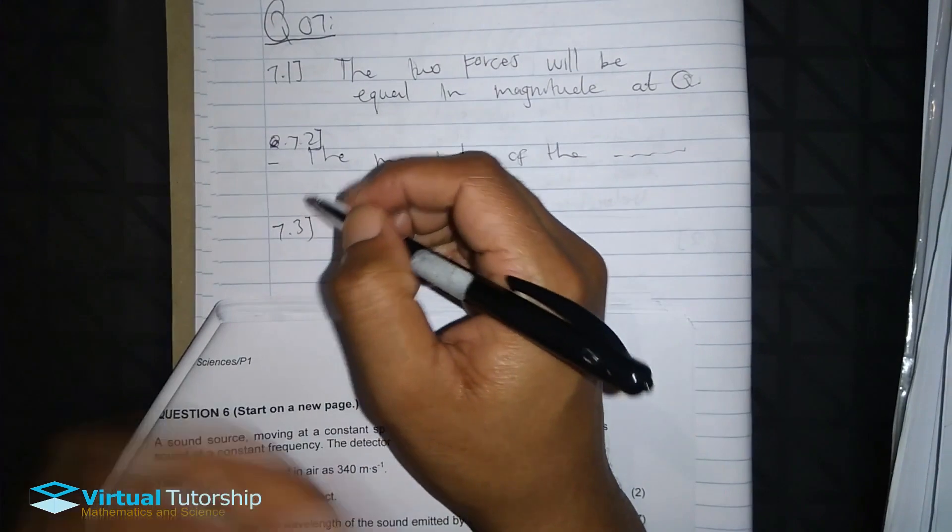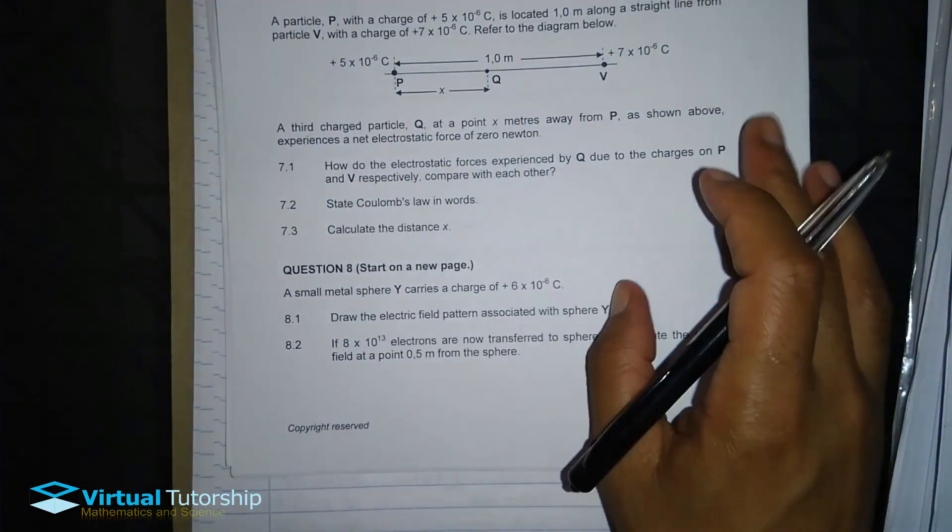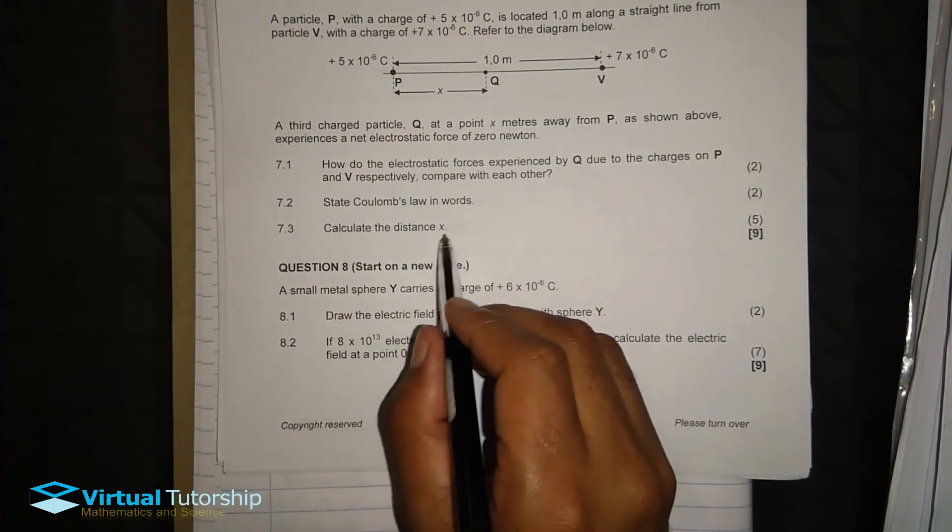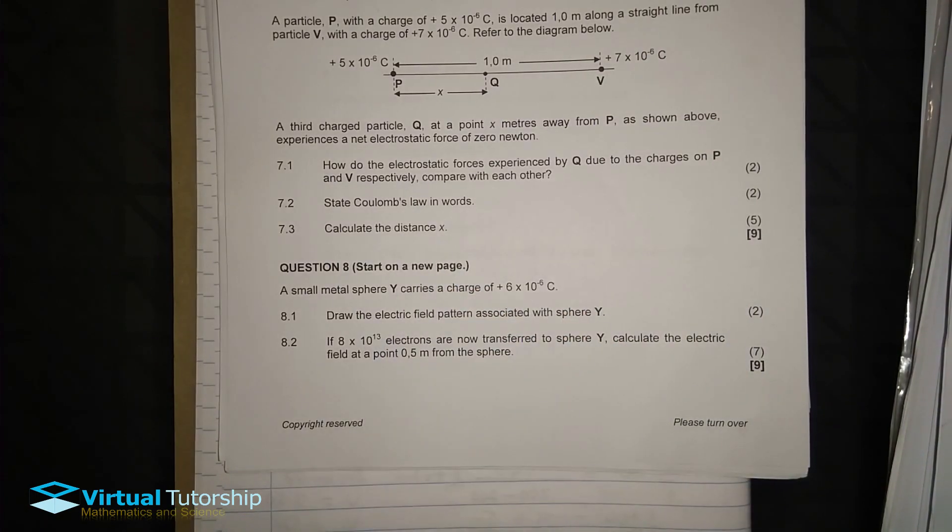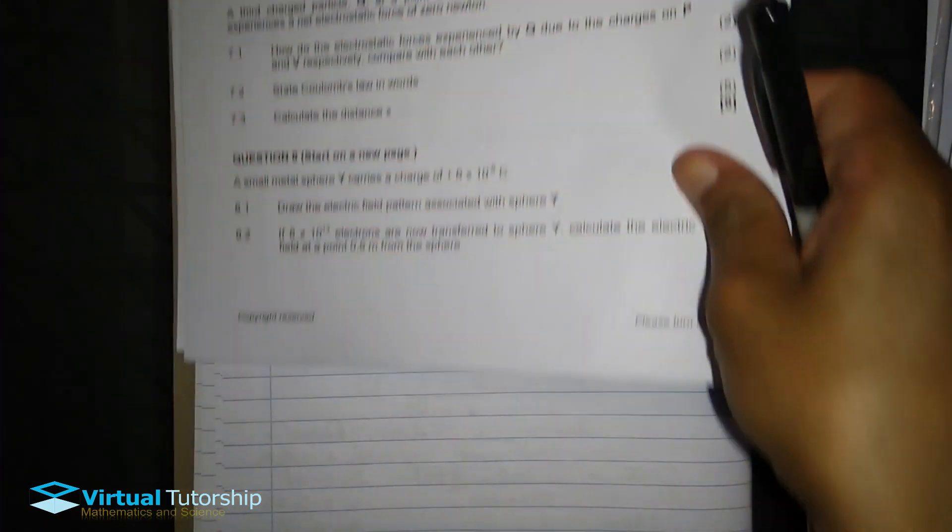The magnitude of the electrostatic force exerted by one point charge on another point charge is directly proportional to the product of the two charges and inversely proportional to the square of the distance between the two charges. 7.3, calculate the distance X. So calculate our distance X.